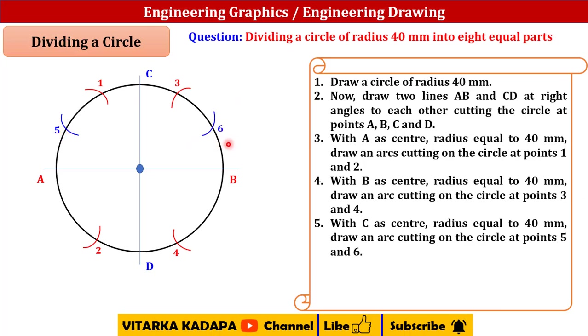Similarly with D as a center and the same radius, cut one more arc on either side of the circle at 7 and we are getting 8 here.